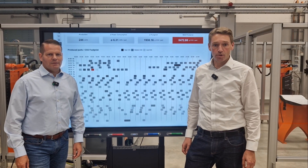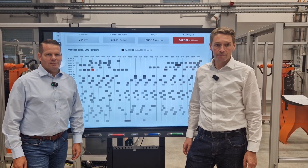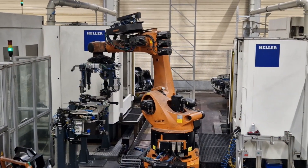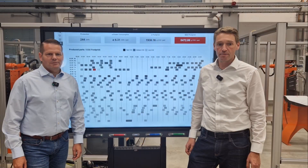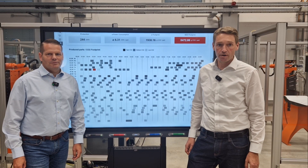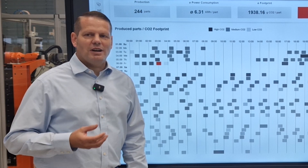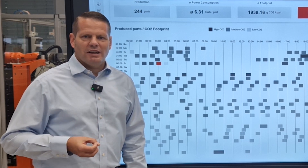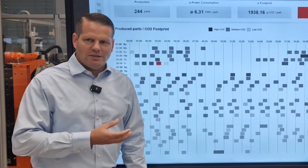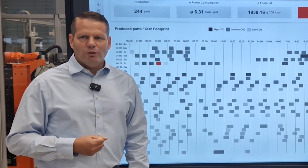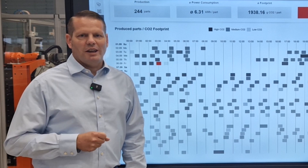Here we see the production data from this production cell and the parts type we just showed. In this example we combine energy consumption data of the production process with data from the German energy mix at the specific time of production. As a result, what we receive is an actual carbon footprint of a given part at any given time. And here we have all the tools available to make your production a little bit more energy efficient.